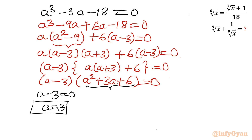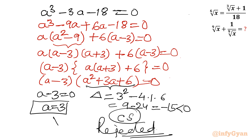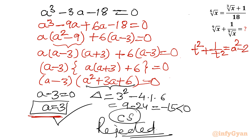From the quadratic factor, we check the discriminant: b squared minus 4ac equals 3 squared minus 4 times 6 equals 9 minus 24 equals minus 15, which is negative. So this gives complex solutions and is rejected. The accepted solution is a equal to 3. Our required expression was t squared plus 1 over t squared, which equals a squared minus 2. With a equal to 3, this is 3 squared minus 2 equals 9 minus 2 equals 7. So the answer is 7.